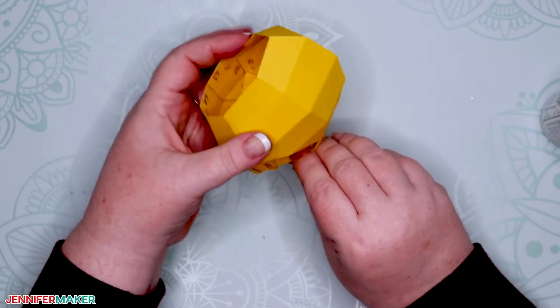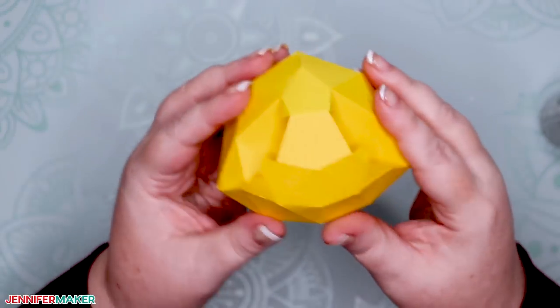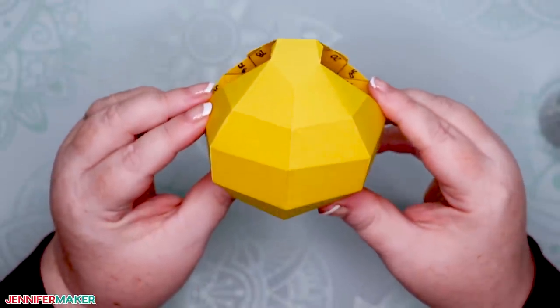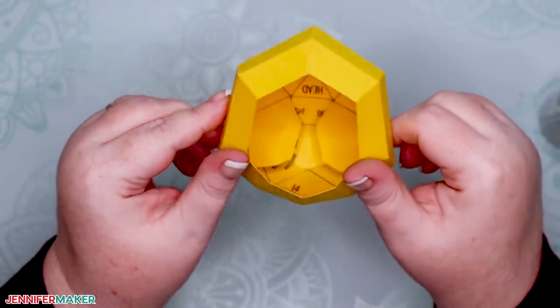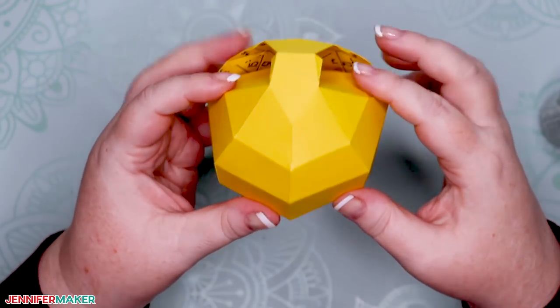When you're done gluing the head of your 3D cat, it will look like this. Note that the pieces in front of the ear are not glued to anything. They sort of just float there loosely, giving you access to the inside of the head during assembly. You can push them inward for now.